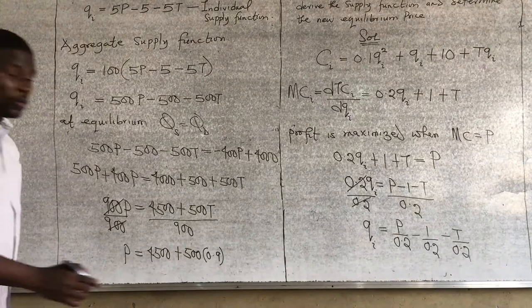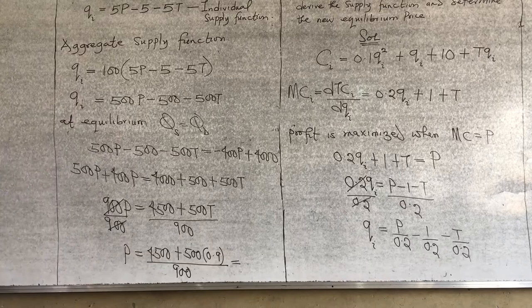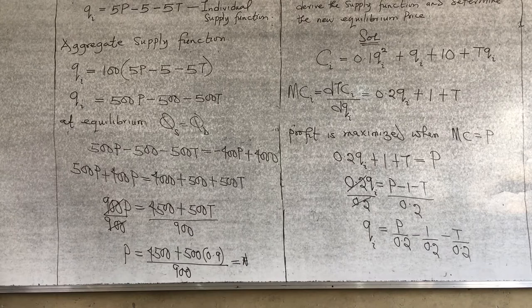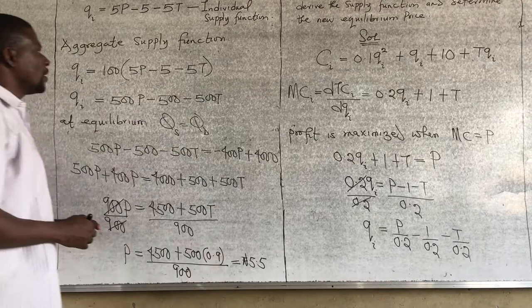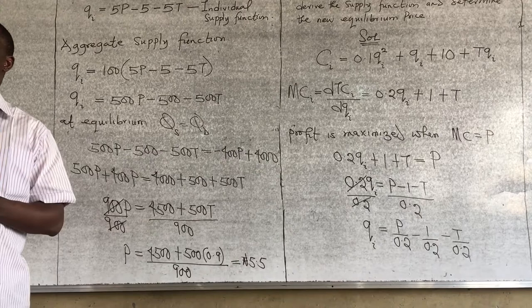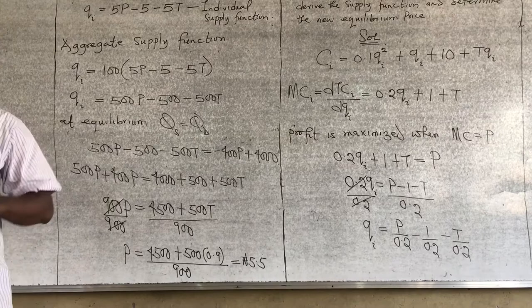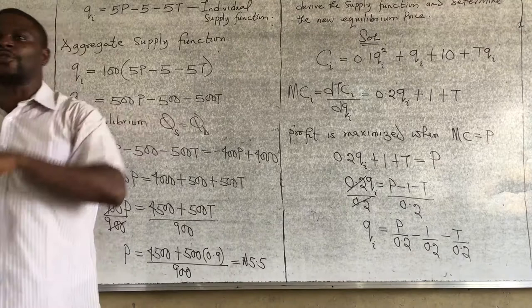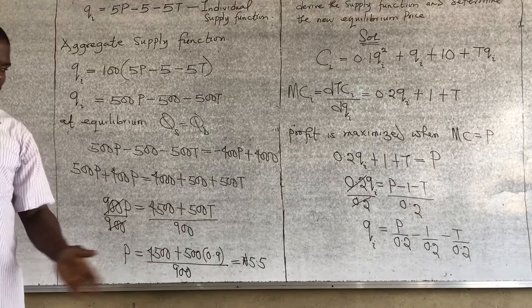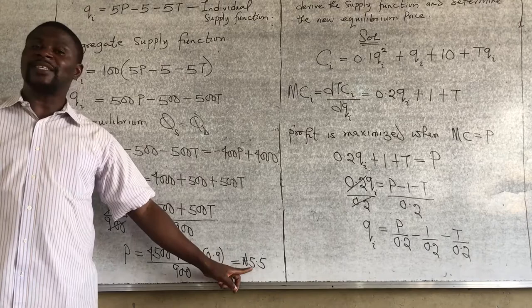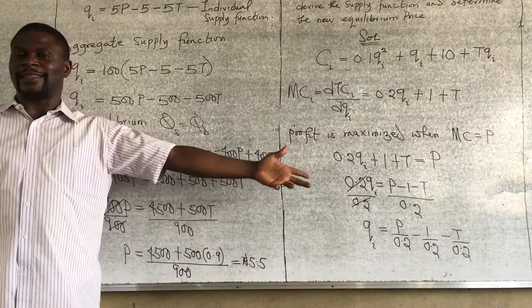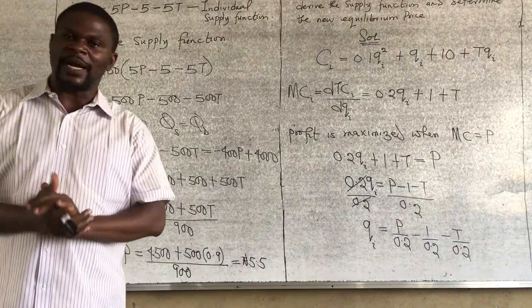Computing the final answer: when the supplier did not pay tax, the price was 5 Naira. Because the supplier is now paying tax, that reflects in the cost and the selling price increases. This is why anytime a supplier pays tax, it always causes prices to rise — they are paying more to produce.